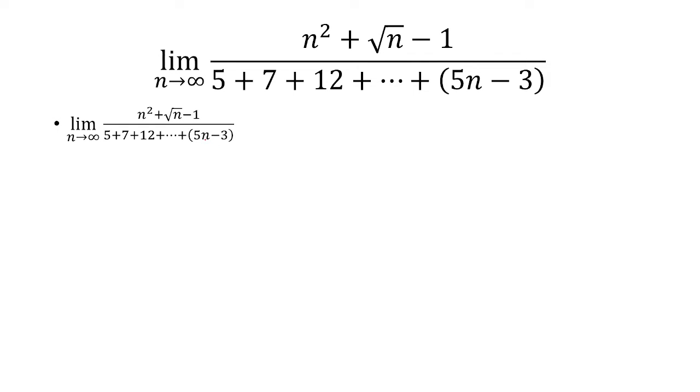The formula in general is going to be 5n minus 3. But when n is 0 we get negative 3, if n is 1 we get 2, when n is 2 we get 7. So starting at n equals 2, that's when we get these terms right here. This 7 will be n equals 2, 12 will be n equals 3, etc.